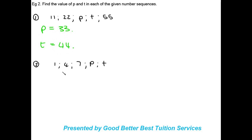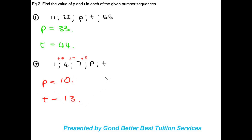Looking at the next example, we go from 1 to 4 to 7 — they're just adding 3 each time. So we add 3 to 7 to get our p value: p = 10. Then our t value is 10 + 3 = 13.